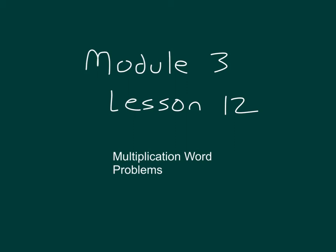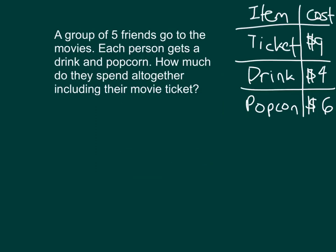Within this lesson, we'll be working with multiplication word problems. A group of friends goes to the movies. Each person gets a drink and popcorn. How much do they spend all together, including their movie ticket? Remember, we're using a read-draw-write approach.